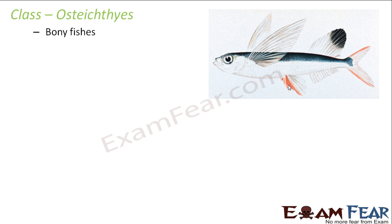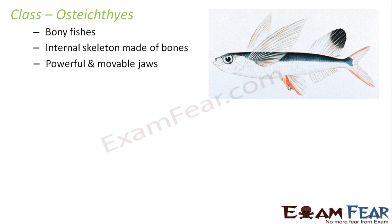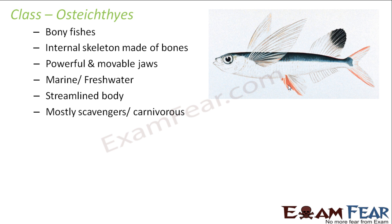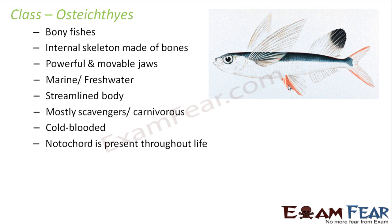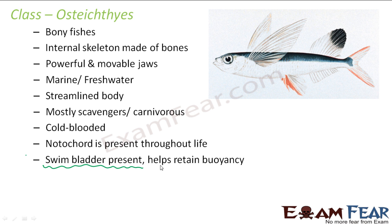The next class is Osteichthyes — the bony fishes — where the internal skeleton is made up of bones. They also have powerful and movable jaws. Unlike Chondrichthyes, which are all marine, bony fishes can be marine or freshwater. They also have a streamlined body and are carnivores or scavengers. Most features are similar to Chondrichthyes except for the skeletal composition. They are also cold-blooded.